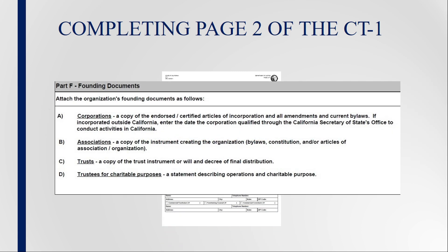The next section requests the organization's founding documents. For California corporations, attach a copy of the articles of incorporation endorsed by the California Secretary of State and any amendments to the articles and the organization's current bylaws. If incorporated outside California, attach a copy of the endorsed articles of incorporation and the endorsed copy of any amendments executed by the state of domicile. Also, provide the date the corporation qualified through the California Secretary of State's office to conduct activities in California.